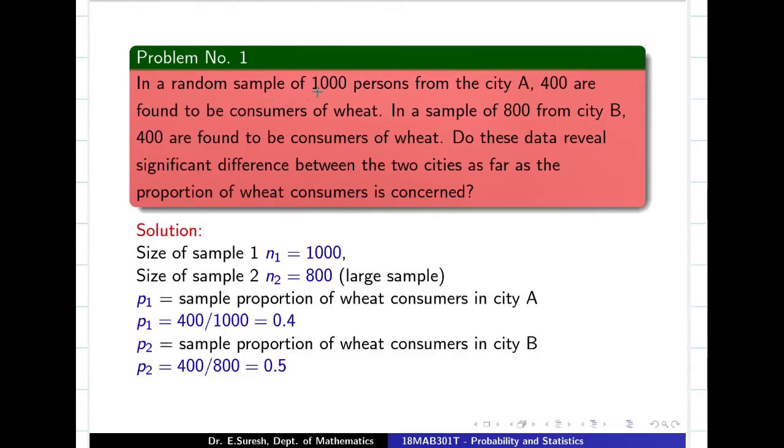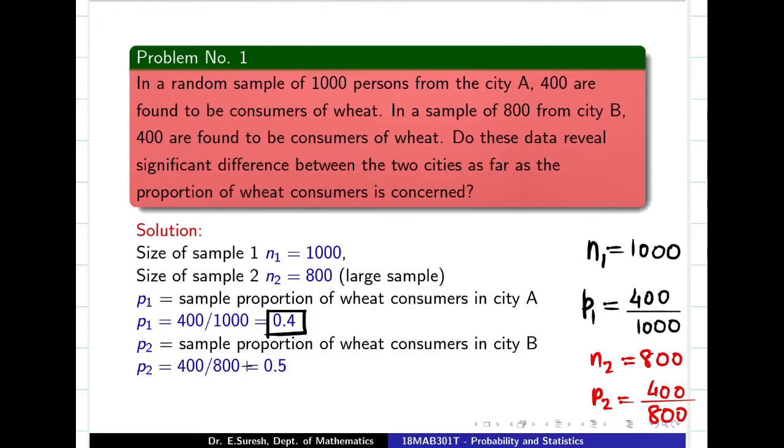Let us see this problem. First of all, we can see 1000 persons in city A. So N is going to be 1000. So this is large sample. And 400 found to be consumers of wheat out of 1000. Then they are giving another sample. So immediately when two samples are given, you have taken this as N1. And my P1 is out of 1000, 400 are taking wheat. So my P1 is going to be 0.4. Then, what else is given? N2. Again, 800 customers or 800 people from city, they are also consuming wheat. Out of 800, again 400 people are consuming wheat. So P1 and P2 are 0.5 and 0.4.